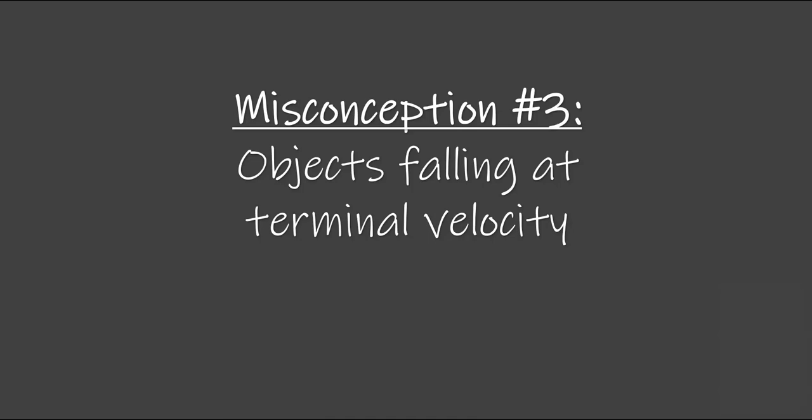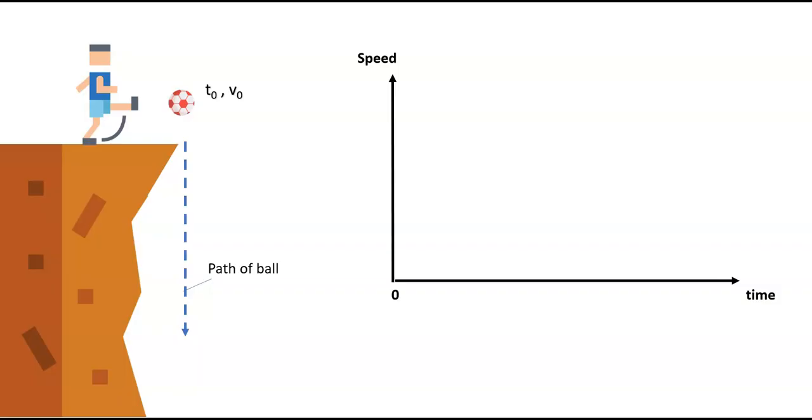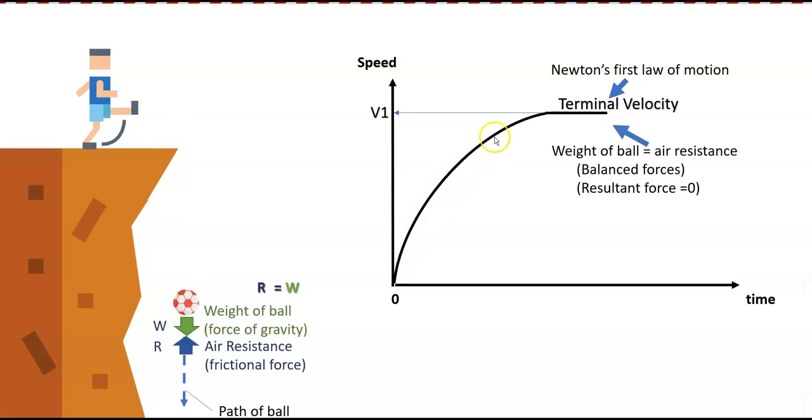Having understood Newton's first and second laws, let's clarify another misconception relating to objects falling at terminal velocity. In this picture, a boy kicks a ball down a high cliff. We know that objects falling in the presence of air will reach terminal velocity because the upward air resistance equals its downward weight. So does it mean that if this ball were to reach its terminal velocity before it touches the ground, the ball will not continue to fall to the ground but will float in air?